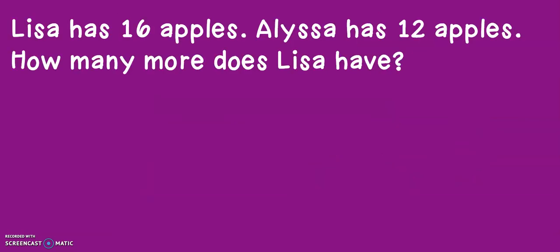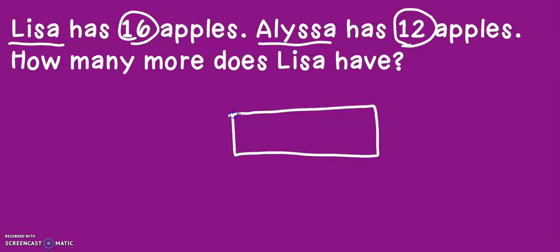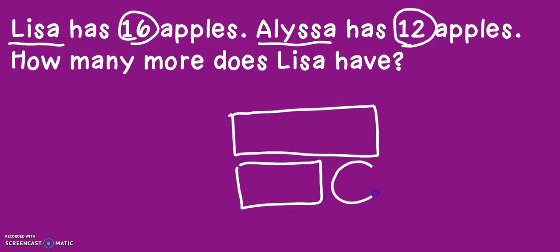Let's take a look at the first problem. Lisa has 16 apples. Alyssa has 12 apples. How many more does Lisa have? So I know I'm comparing Lisa and Alyssa, so I draw my comparison bars. None of these numbers have 'more' or 'fewer,' but 16 is bigger than 12, so that means Lisa gets the bigger bar. She has more apples.